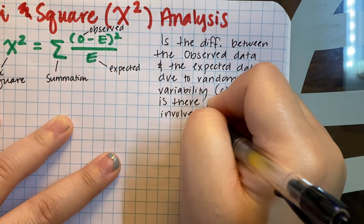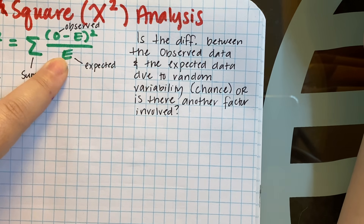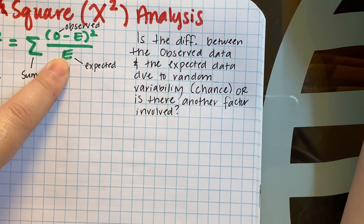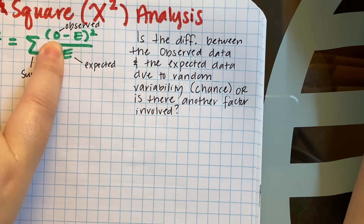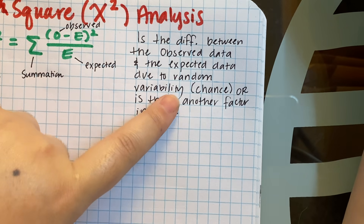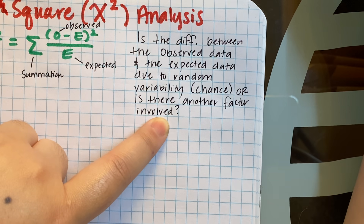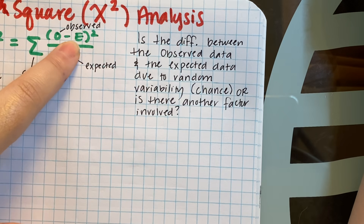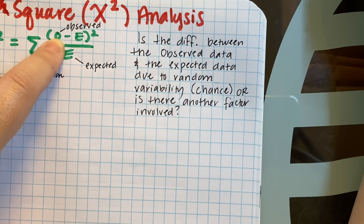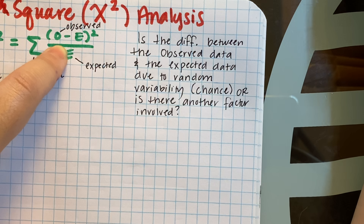If I asked you to flip a coin 10 times, and we all flip our coins — some of us get six and four, four and six, some get five and five, and then maybe somebody gets nine and one. That person who got nine and one: the difference between their observed data (nine and one) and their expected data (five and five) is probably not due to random chance. There's probably some other factor involved, such as the coin might be weighted, causing results to lean toward one option.